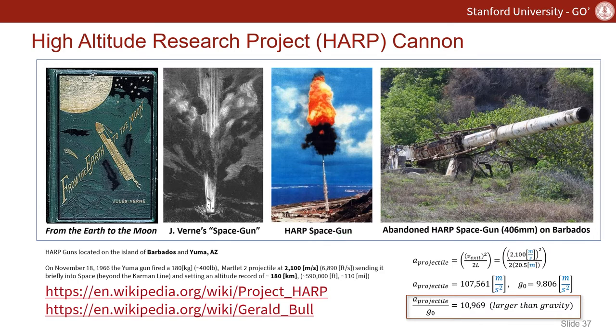The HARP space gun, or High Altitude Research Project Cannon, was used on November 18, 1966 in Yuma, Arizona to fire a 180-kilogram projectile at an exit velocity of 2,100 meters per second. And it did pass the Karman line, it made it into space at a record altitude of 180 kilometers.